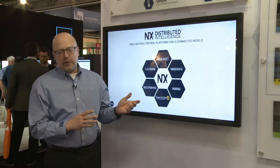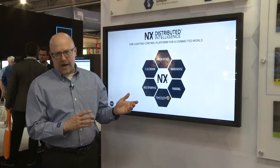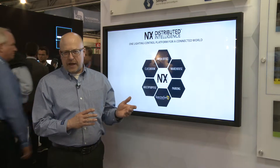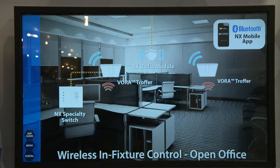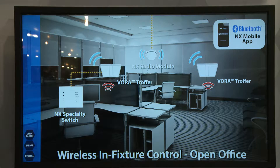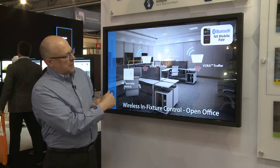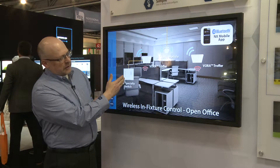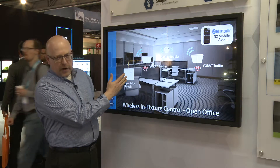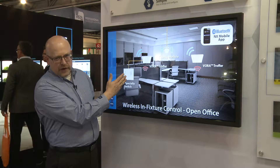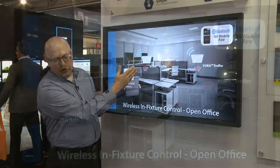What I'll show you here are a couple of examples of how we build various applications. Starting in an open office area environment, you know that you're going to have a variety of different lighting requirements using ceiling grid fixtures like our Vora Troffer. In this example, I'm able to take integrated controllers in each Vora fixture along with a wireless radio and sensor to communicate